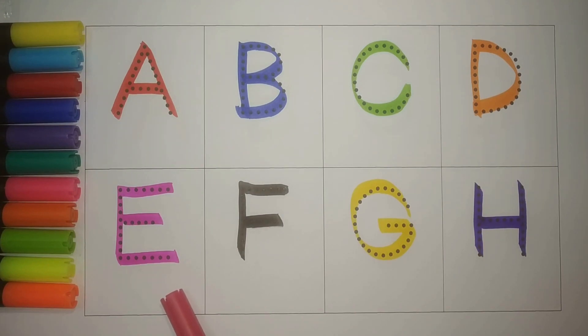E, pink, E for elephant. F, black, F for fish. G, yellow, G for goat. And H, purple, H for horse. Simple.